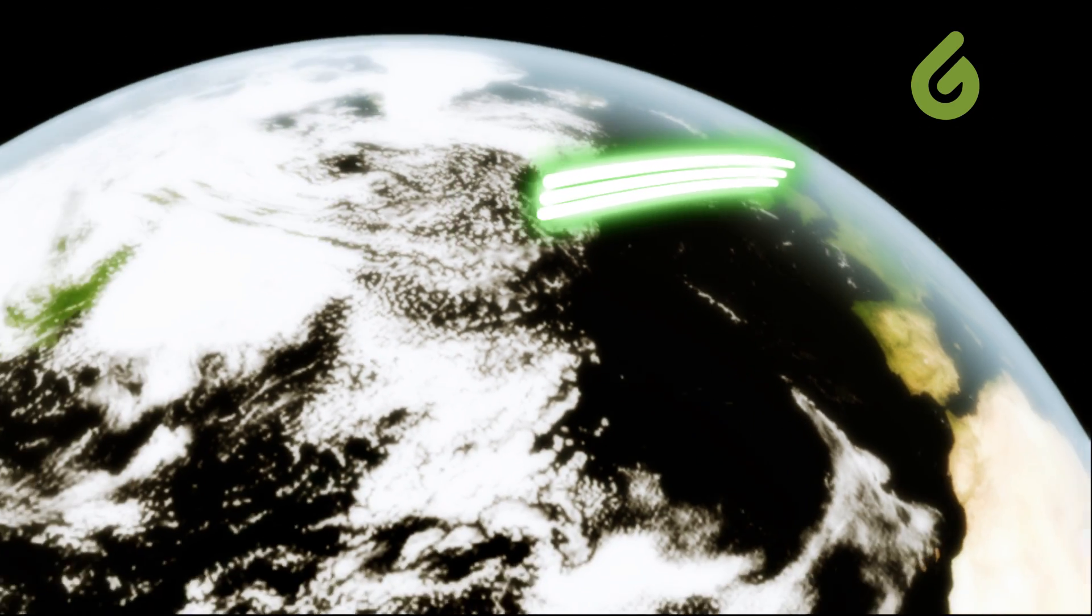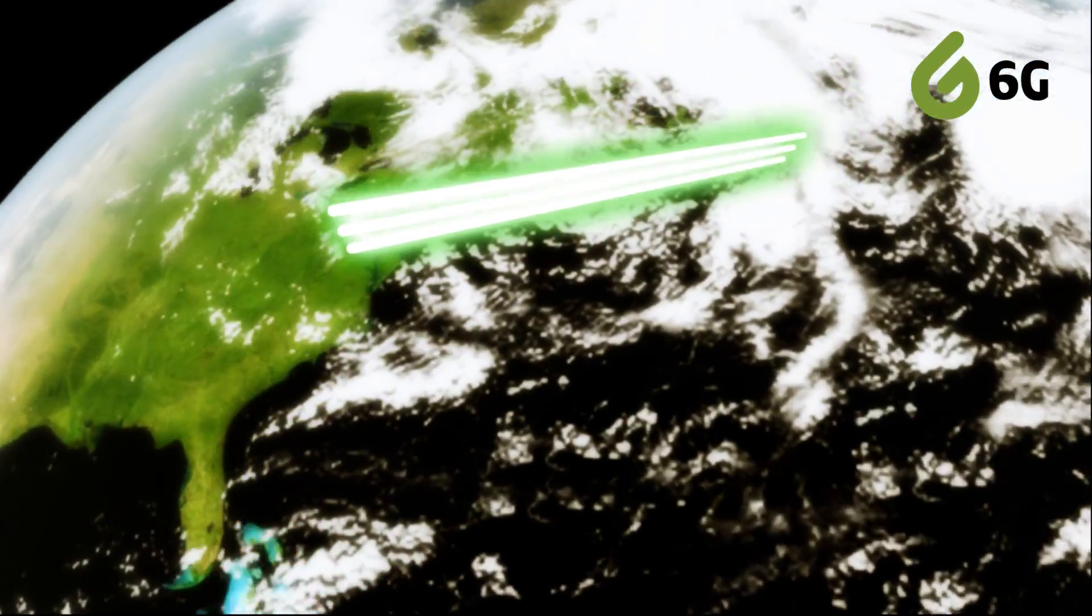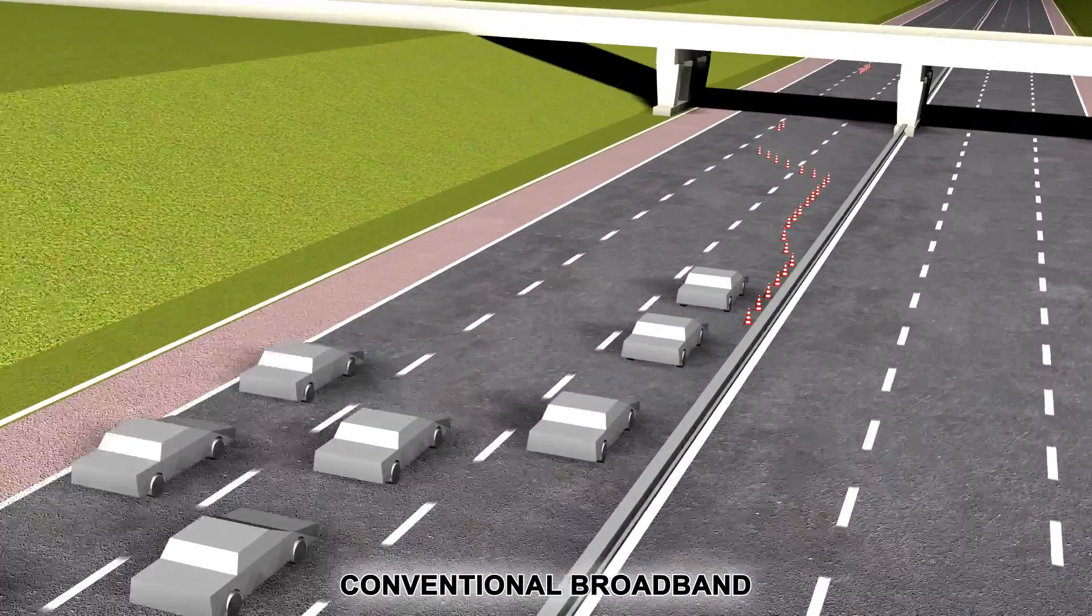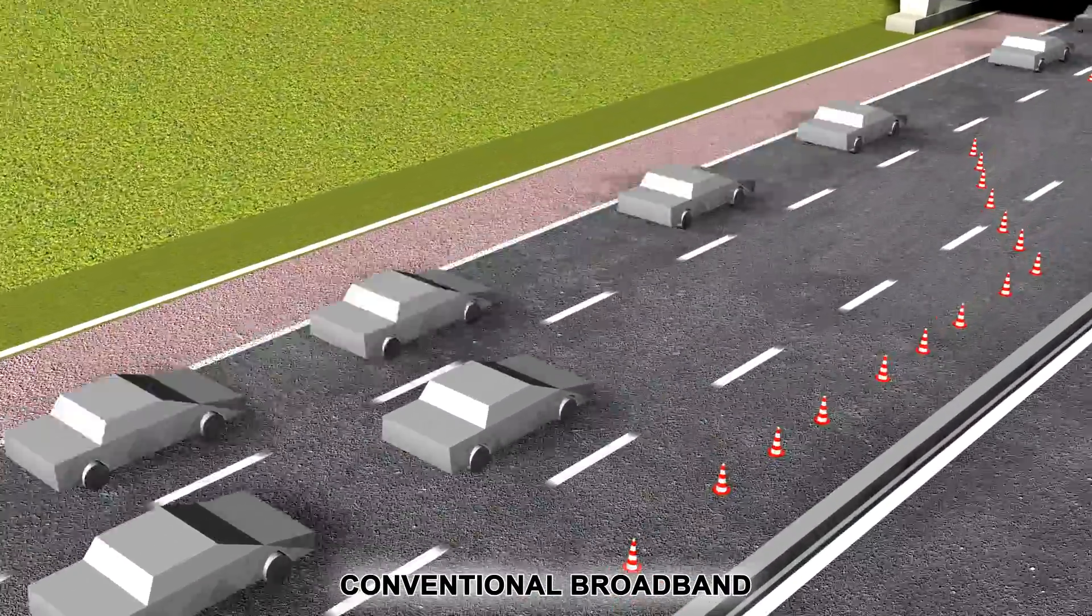But at 6G Internet, we soar up above and fly through the clouds over all the congestion with air-fiber broadband, leaving all our competitors stuck in the traffic below.